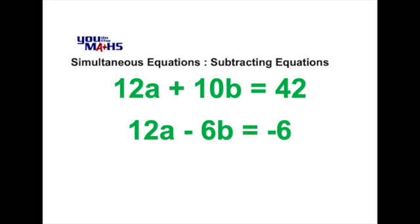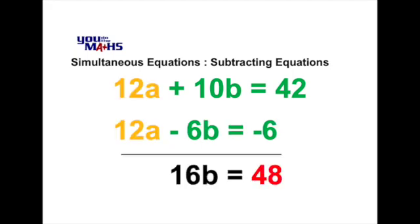By subtraction they're eliminated and you'll be left with 16b equals 48. You can solve for b and once you get a solution for b you can substitute it back into one of those equations and get a solution for a.